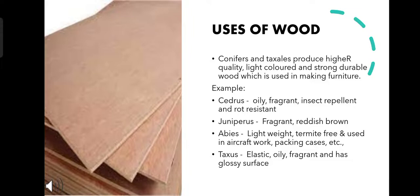Abies, a conifer, has a lightweight, termite-free wood which can be used in aircraft work, packing cases, etc. Taxus is a very strong wood. It is elastic in nature with oily, fragrant characters and has a glossy surface, and hence is used in the manufacture of plywoods.